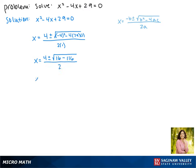Now 16 minus 116 gives us -100. We can't take the square root of a negative, so this equation has no real solutions, but we can find the complex solutions.